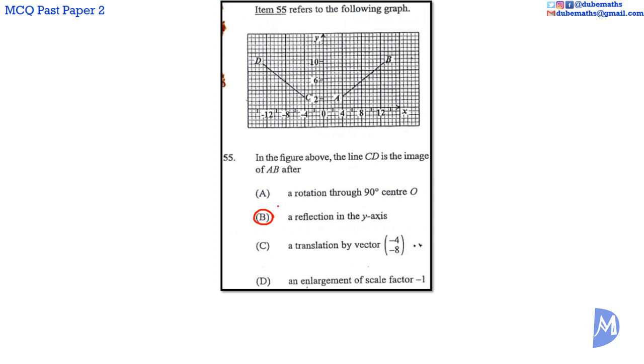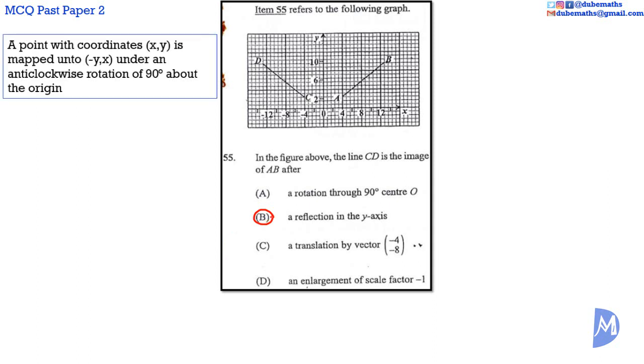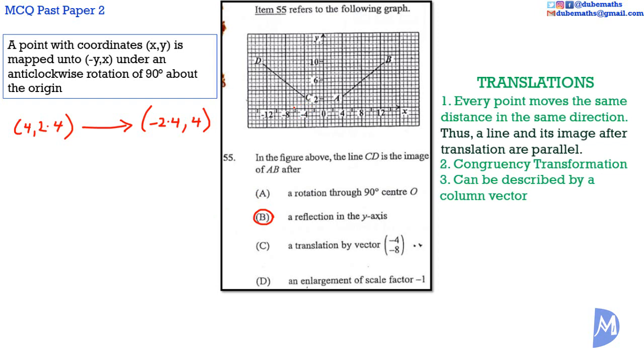It is not A. Because even if we accept that an anti-clockwise direction was omitted from the description of the rotation, a rotation 90 degrees anti-clockwise maps the point XY onto negative YX. So the point 4, 2.4 would be mapped upon negative Y, negative 2.4, 4. This point is negative 4, 2.4. So A is not the answer. It is not C because a line and its image after translation are parallel. And it is not D because a center of enlargement is not defined, and there is no center of enlargement that puts the image of AB here. And of course B, CD is the reflection of AB in the Y axis.